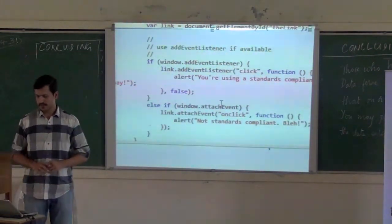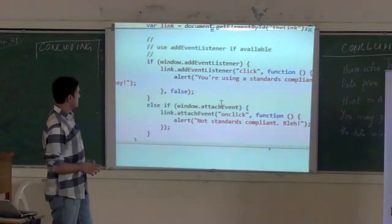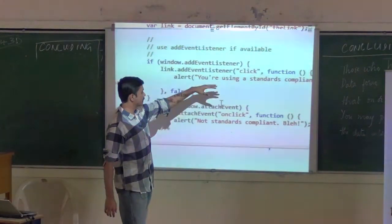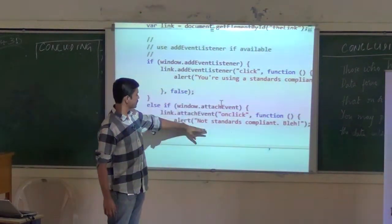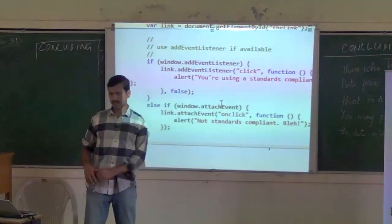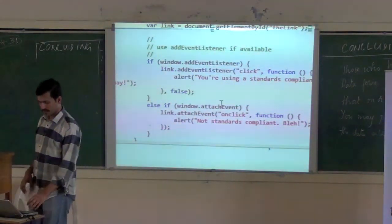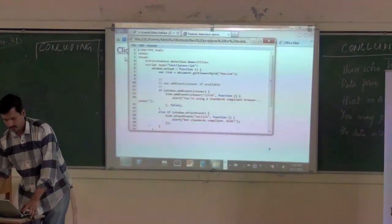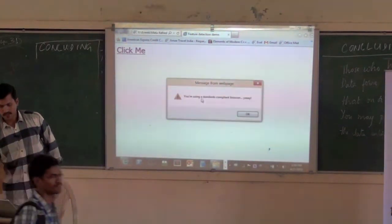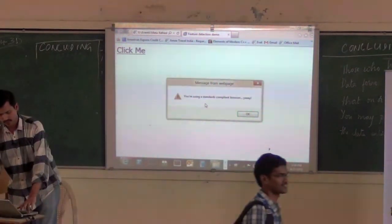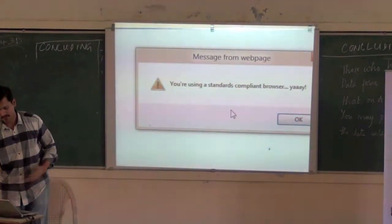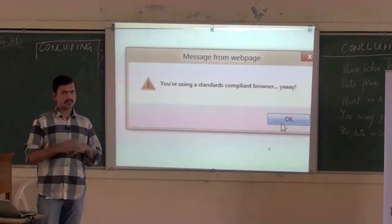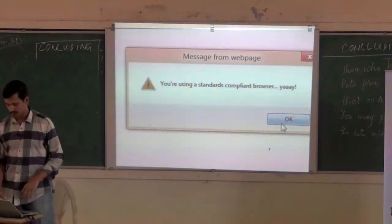It's essentially the same thing — I say window.addEventListener, then I say addEventListener and I attach a handler for that, and basically show a different message. If it's attachEvent, then I say you're not using a standards-compliant API, otherwise you are. I go ahead and click this little link — it says you're using a standards-compliant browser. It's checking for addEventListener; if it's available, then it works.